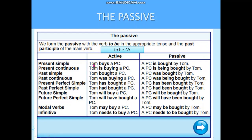For example, in the active voice: Tom buys a PC — a personal computer. In the present continuous active: Tom is buying a personal computer. In the passive voice: A personal computer is being bought by Tom.